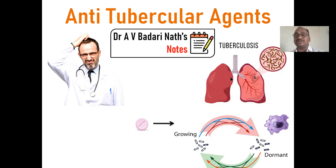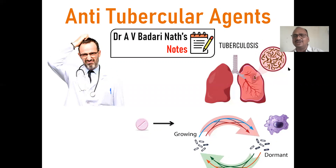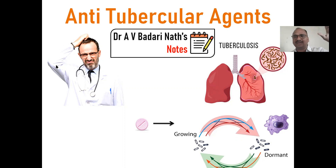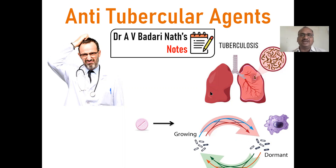Tuberculosis is caused by a very cunning organism. It is supposed to be given an Oscar award. Why? Because it has two important features that give doctors, paramedical staff, pharmacists, and drug investigators a real headache.